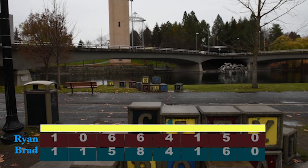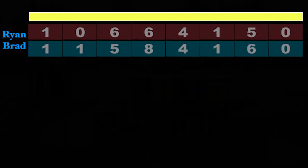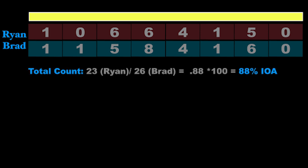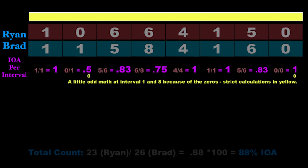Because we're working with event recording here, we can look at three different types of inter-observer agreement. Number one is total count inter-observer agreement — this is where we look at the total independent of the intervals. We take the smallest number — like Brad's or mine — and divide it by the largest number, and that gives us a figure. The next is mean count per interval, where we take interval one and take the lowest number divided by the highest number. If I'm lower than Brad, we take my count divided by Brad's score, or vice versa, and we get a percentage for that interval.